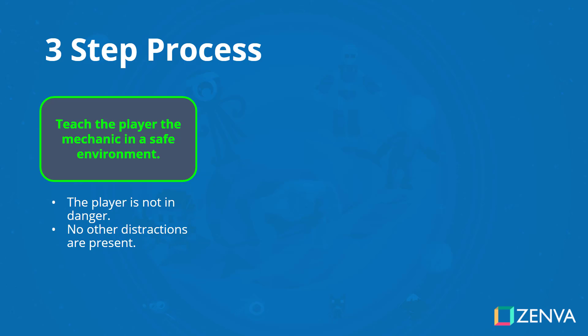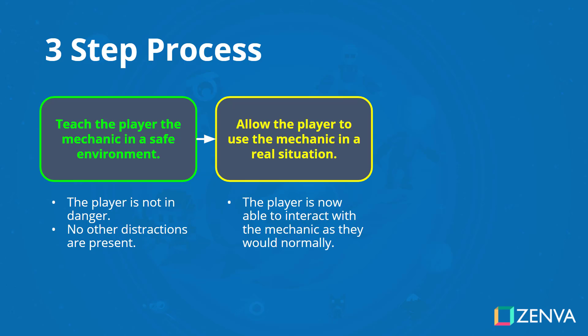Normally, if it's something like an enemy, we'll see the enemy and actually be able to preview what the enemy is going to do in a scripted encounter. Maybe another NPC will go out and the enemy will defeat them in a certain way, so that we then know how that enemy functions. The next step of the process is to allow the player to use the mechanic in a real situation, where the player can interact with the mechanic as they normally would. There is danger now where they can be damaged, but hopefully from the previous step they have informed themselves on what this mechanic is and how it can be used.